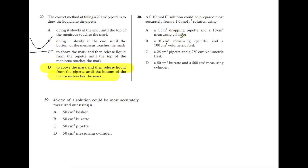We have a 10 cm³ measuring cylinder and a 100 cm³ volumetric flask. Volumetric flasks are accurate however measuring cylinders are not. 25 cm³ pipette and 250 volumetric flask. Both of those are very accurate. And a 50 cm³ burette and 500 cm³ measuring cylinder. Burettes are accurate but measuring cylinders are not. So C would be your best answer there.